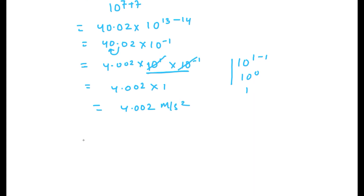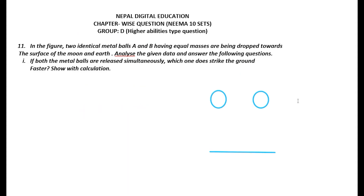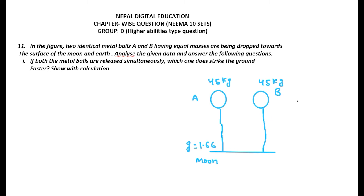Let us look at the next problem. In the figure, two identical metal balls A and B are being dropped toward the surface of the Moon and the Earth respectively. They have equal mass of 45 kg each. On the Moon, g is 1.66 m/s², and on the Earth g is 9.8 m/s².